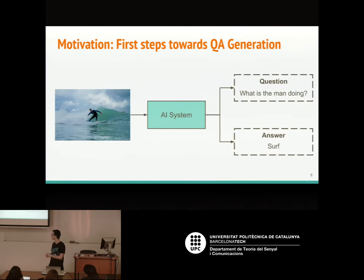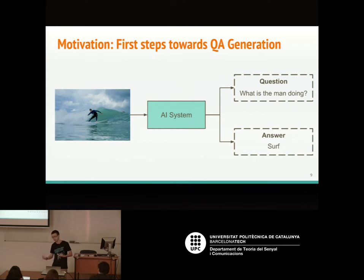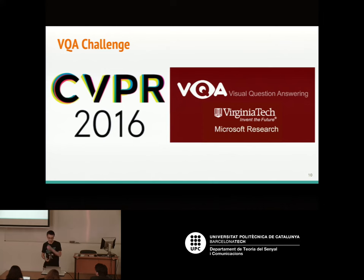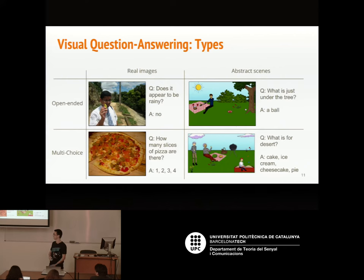Another motivation for this project is the end goal of this research line: the generation of question-answer pairs — building a model that is able to create a question and its related answer given an image. We'll explain that in the future work section. And of course, we also have the Visual Question Answering Challenge, the biggest challenge for the VQA task, embedded in CVPR 2016, which proposes different sub-tasks.